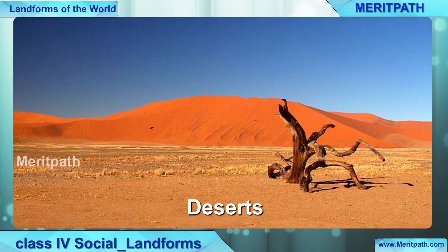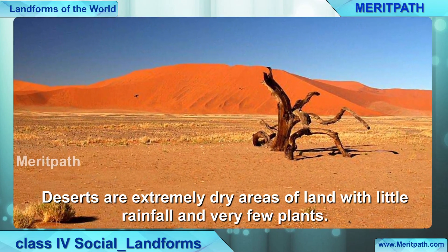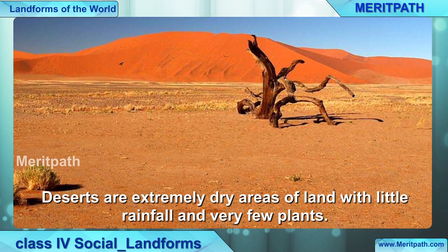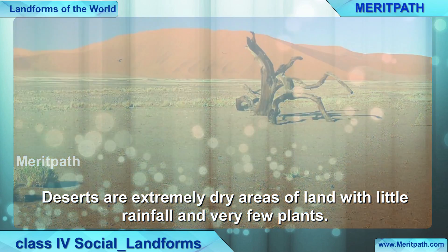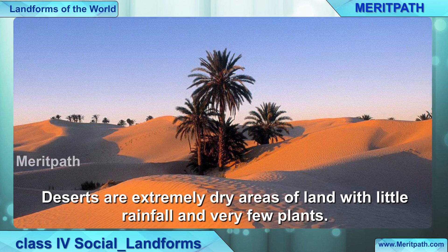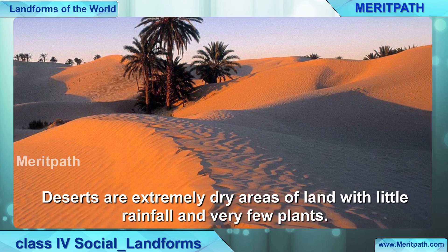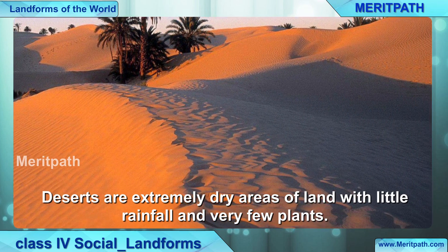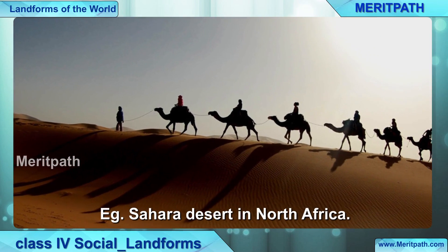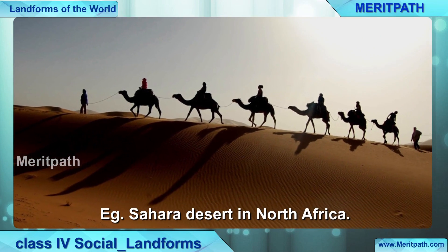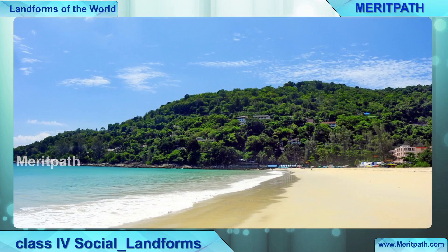Deserts. What are deserts? Deserts are extremely dry areas of land with little rainfall, and very few plants grow here — we can see cacti in deserts. The Sahara Desert in North Africa is the biggest desert in the world.